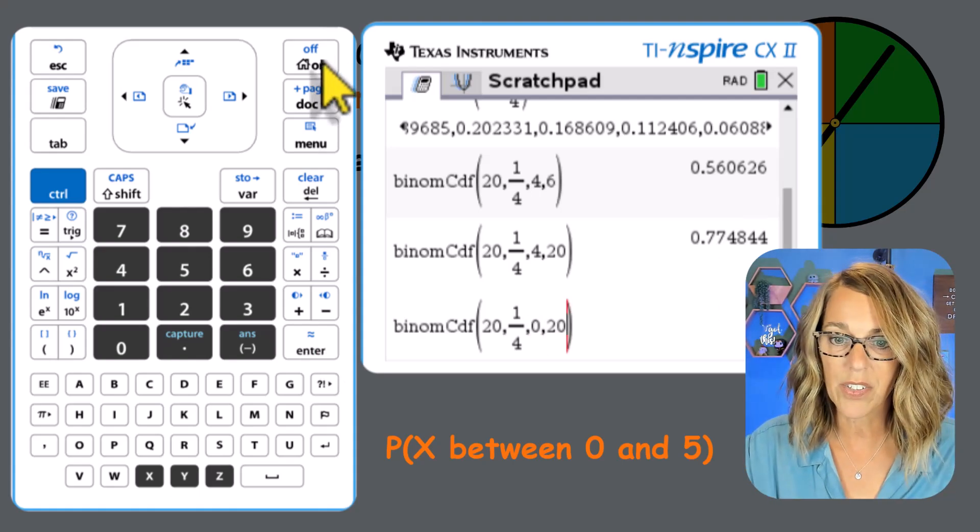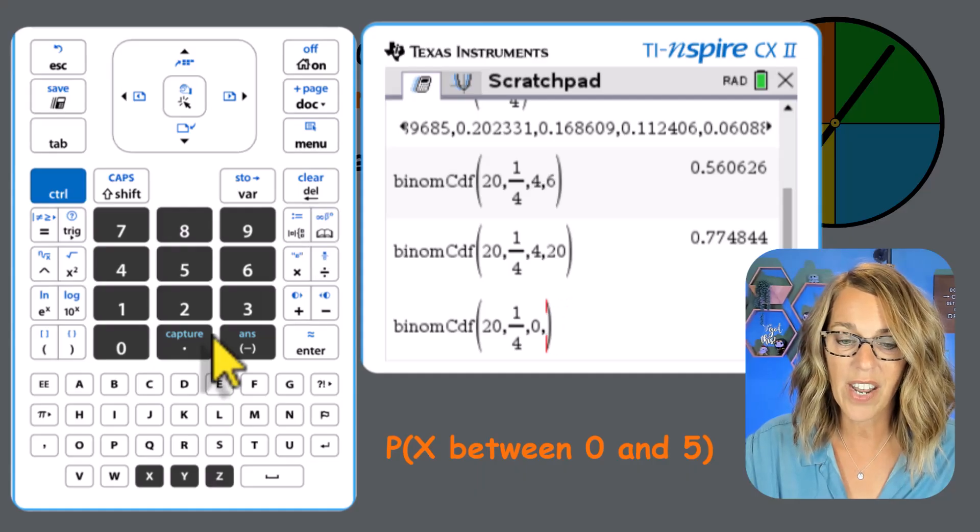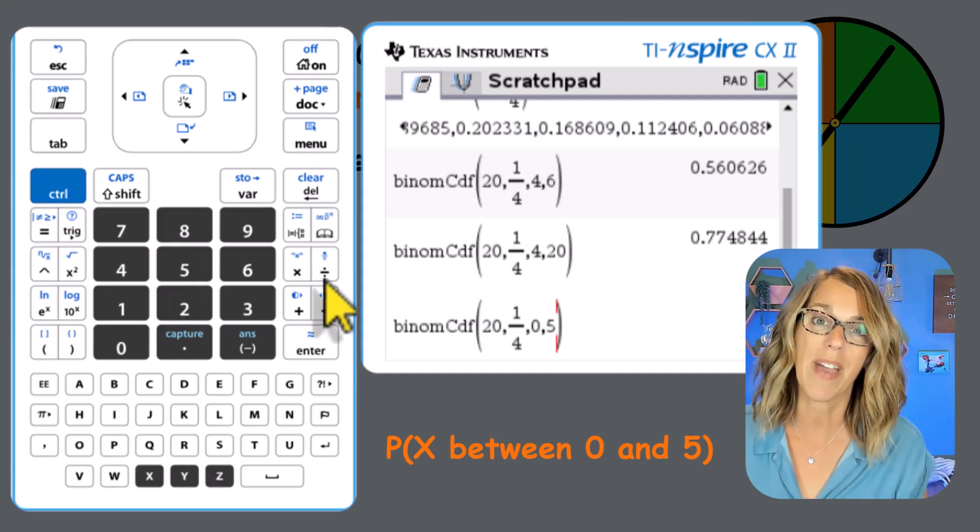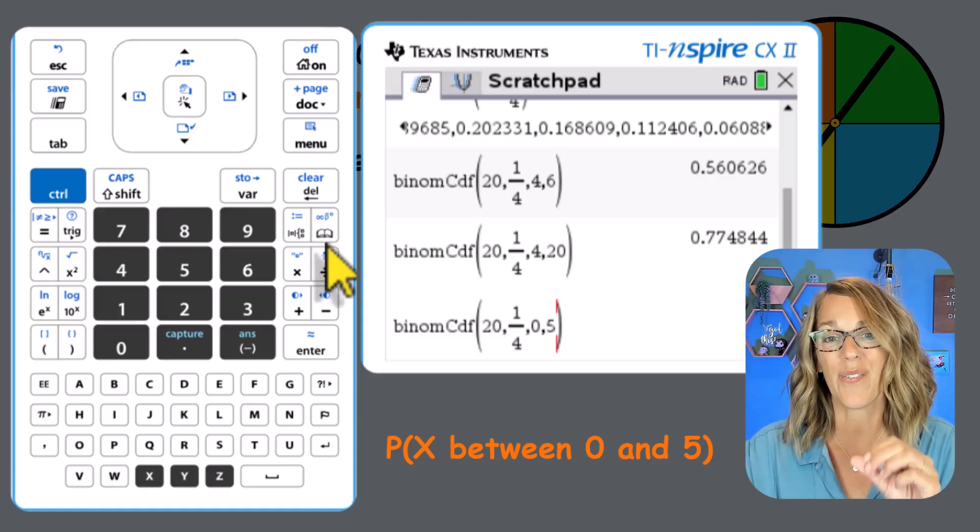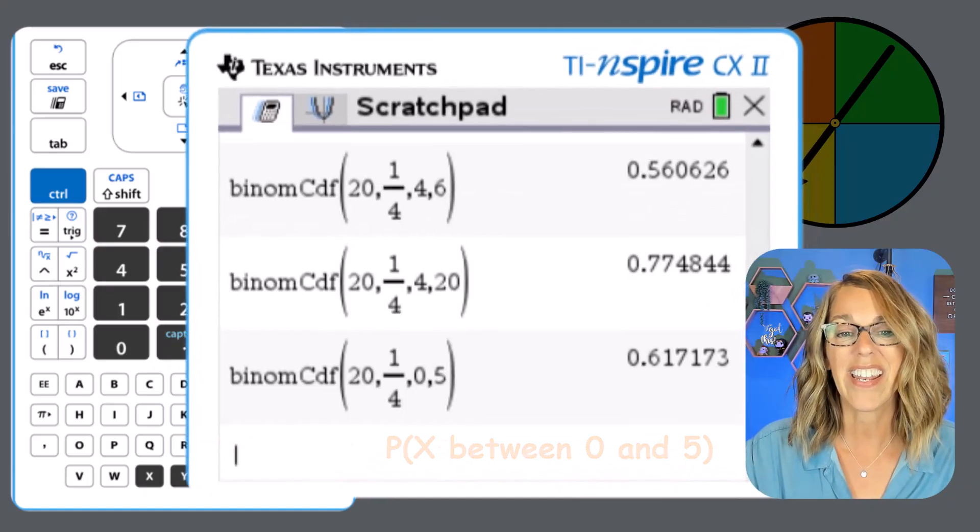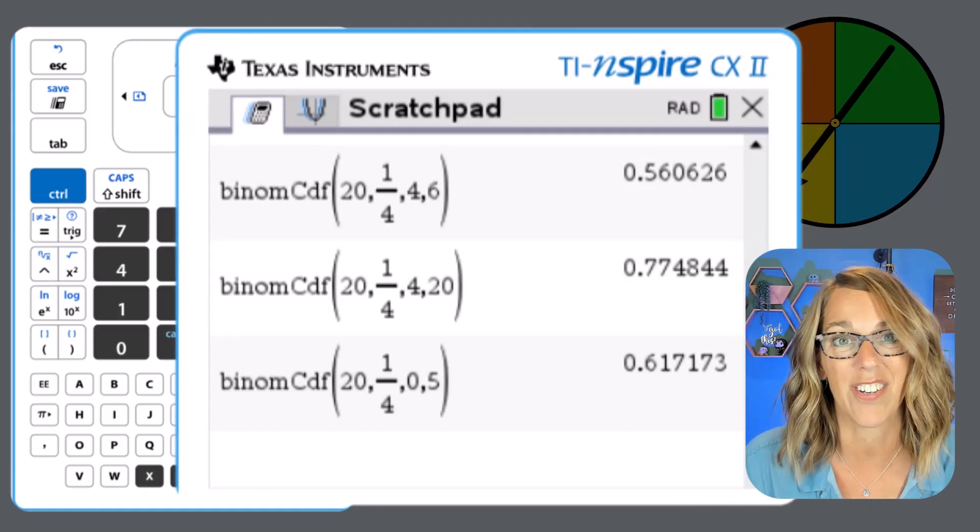I'm going to change it to zero as the minimum. And then let's go ahead and back arrow. And then I want five for the maximum, so much easier than going into all of your menus. And then hit enter when you're ready for that calculation.